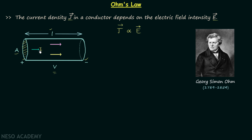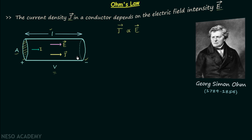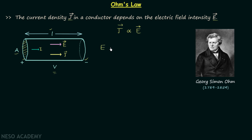Current flows in this direction, and the current density J will also be in this direction. The electric field intensity will be in the same direction because we know the electric field goes from the positive terminal to the negative terminal. When we place a positive test charge in the electric field, it will experience a force from left to right, and the direction of electric field intensity is the same as the direction of that force. Therefore, electric field intensity is directed from left to right, and we know electric field intensity equals voltage divided by the length of the conductor.